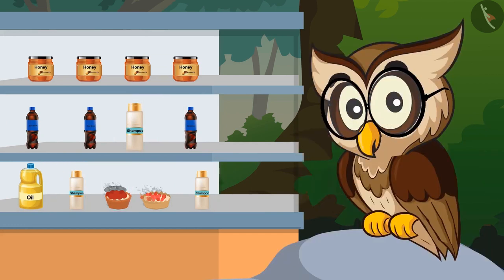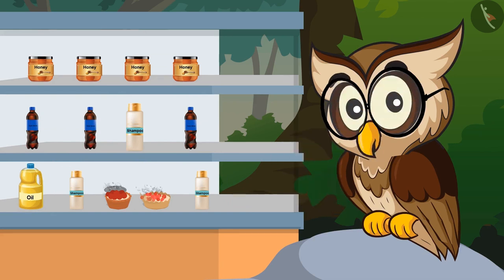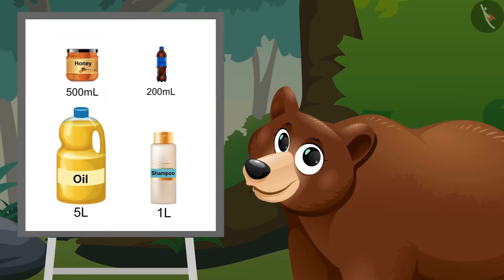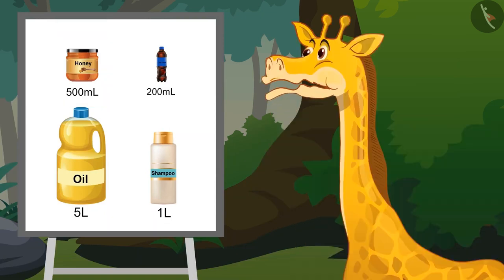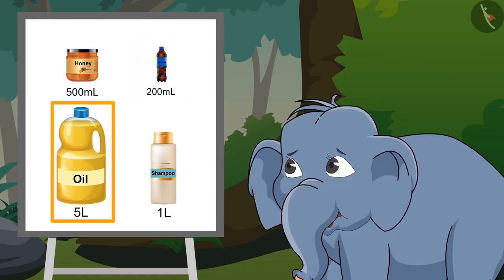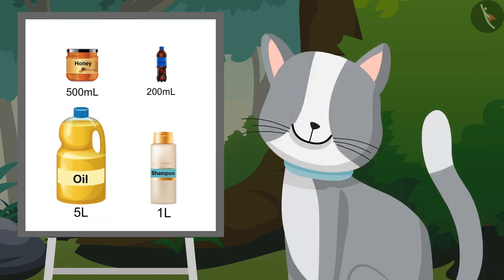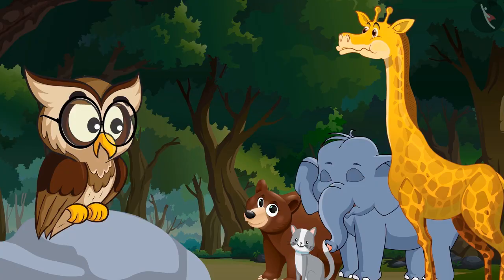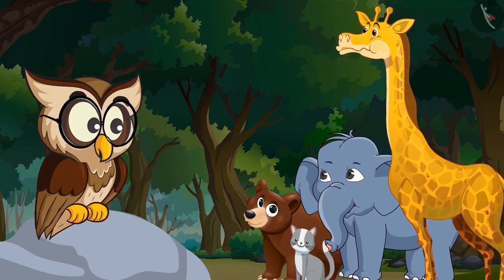Can you match all these liquids with their right amount? Bottle of Honey is of 500 ml. Bottle of Cold Drink is of 200 ml. Bottle of Oil is of 5 litres. Bottle of Shampoo is of 1 litre. Exactly!